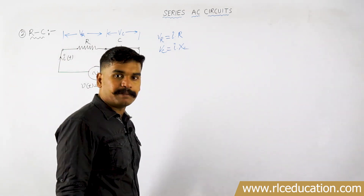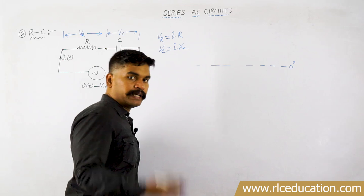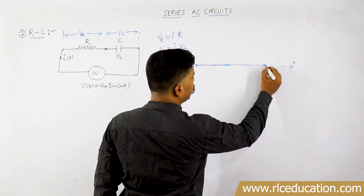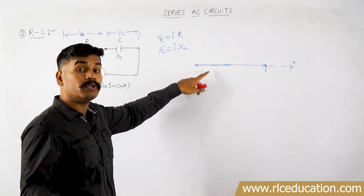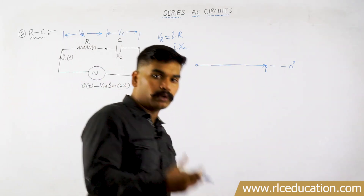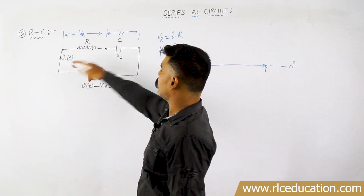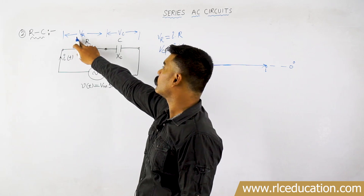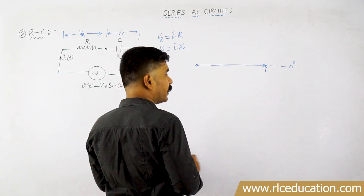Since current is common in both elements, I will draw a vector diagram taking current as the reference at 0 degrees. So the current vector I is resting on the 0-degree reference line. I want to find the angle between voltage and current in each element. In a resistor, current and voltage are displaced by 0 degrees — so they are in phase, overlapping each other. The angular difference between voltage and current in the resistor is 0 degrees.